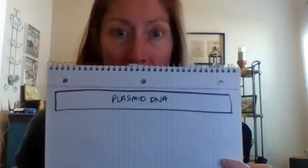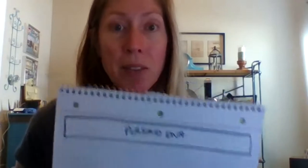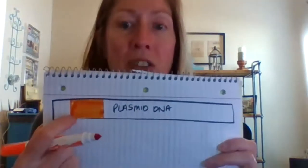On my piece of paper, I'm going to start out by making my plasmid, but it's already been cut. I just made a long strip and labeled it 'plasmid DNA.' On a part of my plasmid, I'm going to highlight a section to represent a gene for antibiotic resistance — I'll use a different color for that.